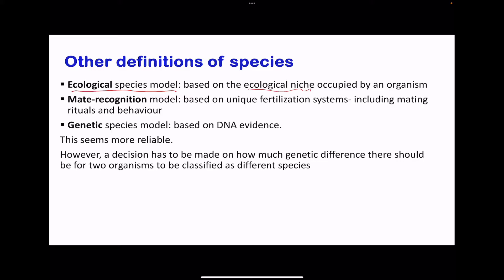There is also the mate-recognition model, where certain unique fertilization systems including mating behavior and rituals — if recognized by two different organisms — allow us to classify them as the same species. There is also the genetic species model, based on DNA evidence: if two organisms have close genetic similarities they could be classified as the same species. However, we must decide how much genetic difference is required to classify organisms as different species, which limits the genetic species model.